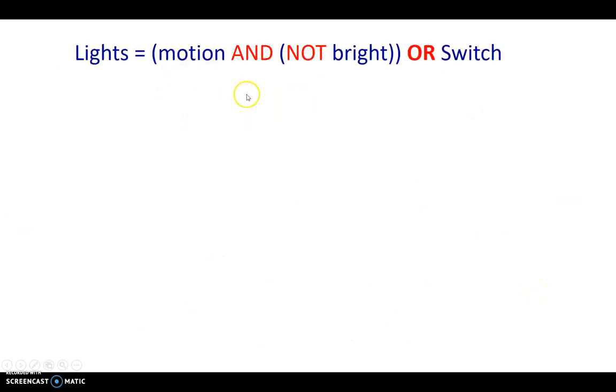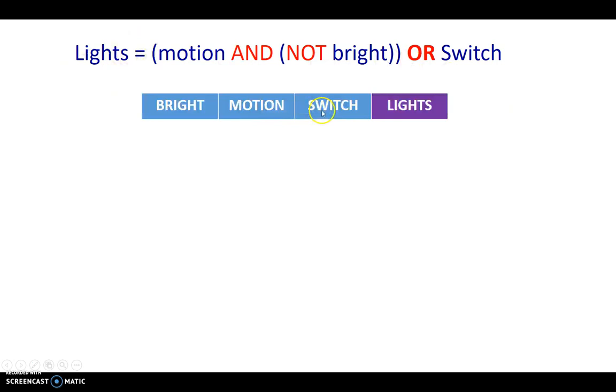Now, for this particular expression, let's consider the truth table. Remember, truth table is an enumeration of all possible combinations for the input and the outputs. So here there are three inputs, motion, bright, and switch. And the output is called lights. So let's see what all possible scenarios we have.